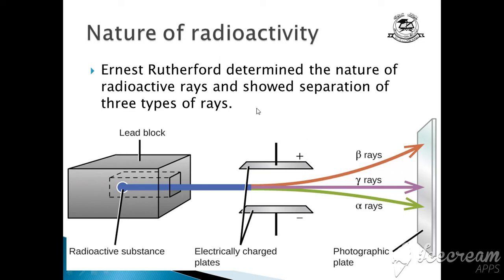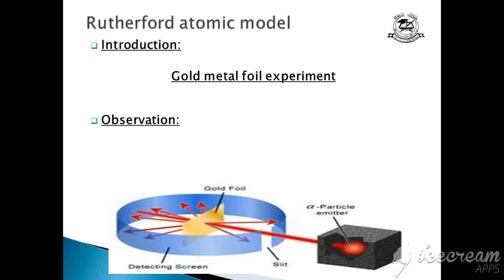This is the diagram showing the experiments done by Ernest Rutherford for the separation of alpha, beta, and gamma rays that are called radioactive rays. Now the next topic is Rutherford atomic model.